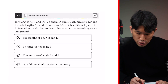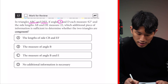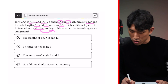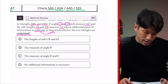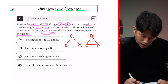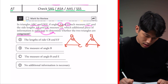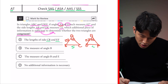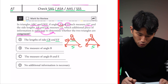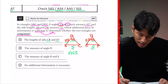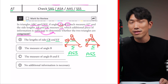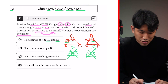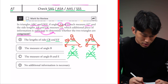Here's how it works with question 12: in triangles ABC and DEF, angles A and D each measure 42 degrees, and AB = DE = 22. Which additional piece of information is sufficient to determine whether the two triangles are congruent? Visualizing this: A = D = 42, AB = DE = 22. For choice A, knowing the lengths of CB and EF gives us angle-side-side, which is not one of the four valid conditions — it's not family friendly, so to speak. Choice A is out.